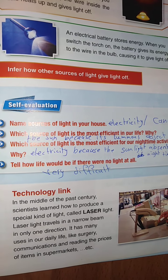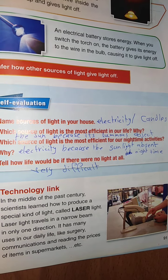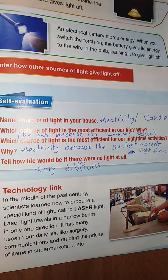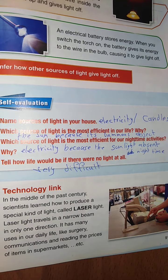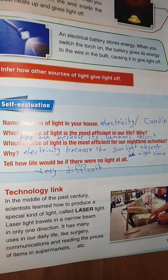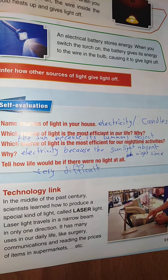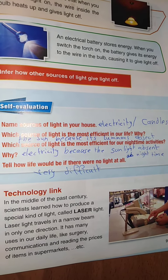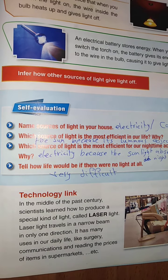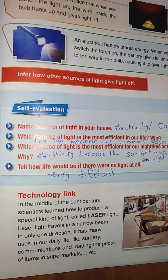What source of light is the most efficient for our nighttime activities and why? Electricity, because it is good for your activities at nighttime since sunlight is absent at night.